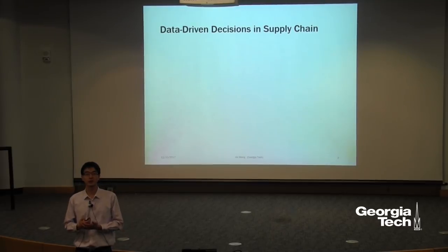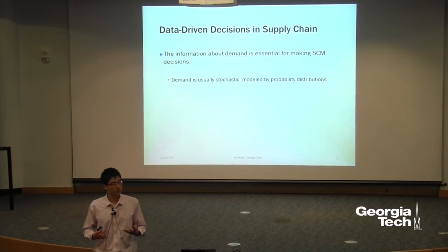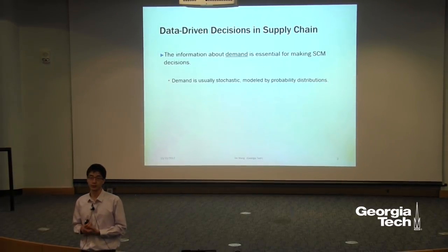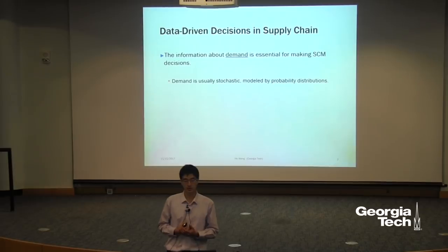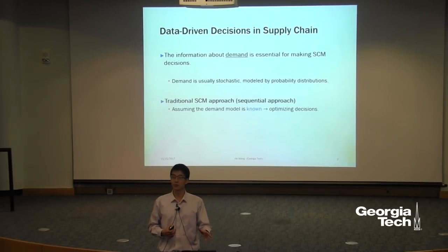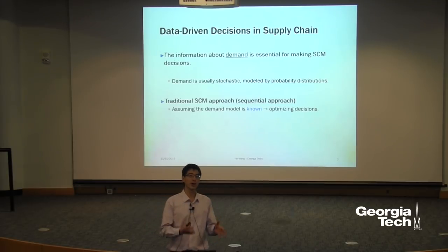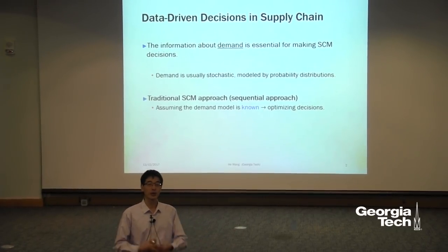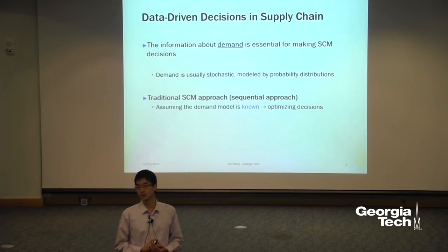Today I want to discuss data-driven decisions applied to price optimization. We know that demand information is very important in supply chain, but demand is usually hard to predict. We typically model demand as some stochastic processes. The traditional approach to include demand forecasts in supply chain is what I call a sequential approach: we first collect historical data and forecast, assuming a demand model, and then we have a decision-making process where we take the forecast as input and optimize the model to make decisions.